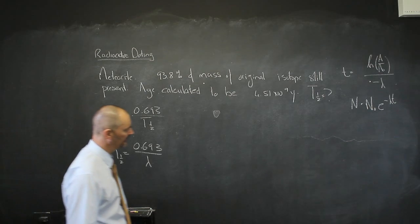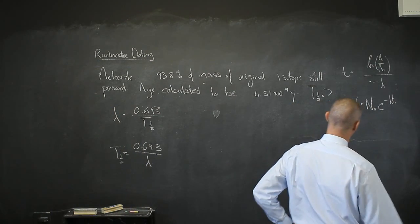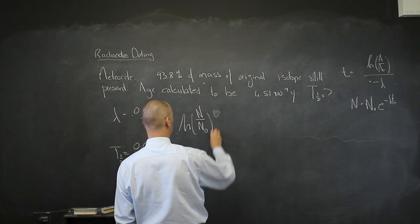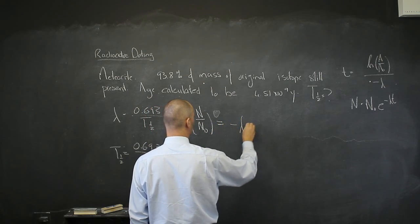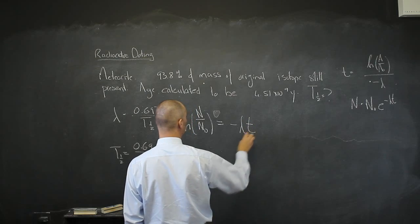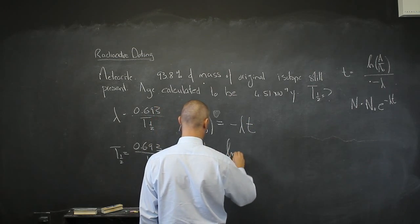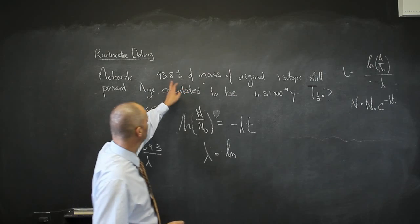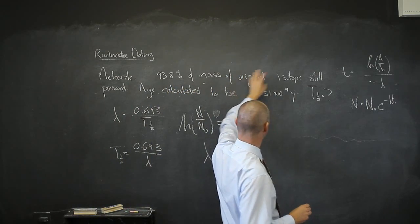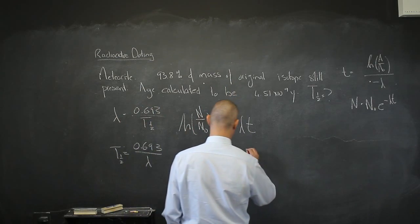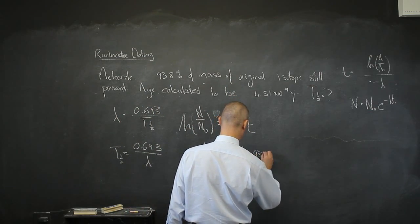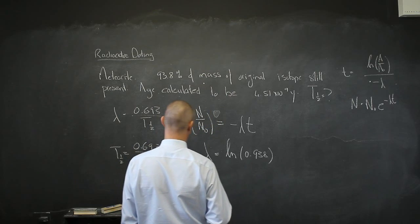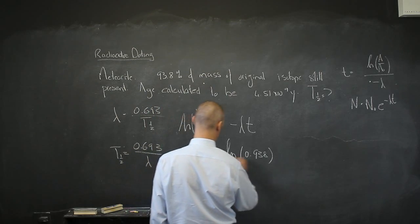If I have n divided by n0, I take the natural log of that, that equals minus λt. That's the age t, not the half-life. λ is going to be the natural log of—now do I know n divided by n0? Yes, I do, because the mass, 93.8% of the mass of the original isotope is still present. That means this is 0.938 as a fraction. That is going to be that divided by negative t.